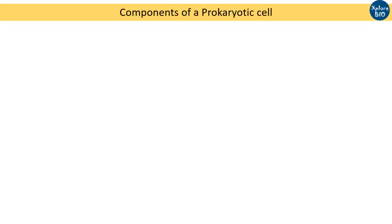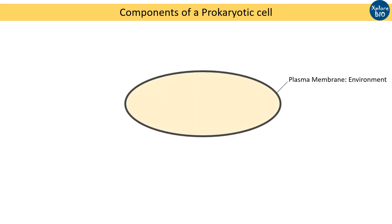So, let's begin with the components of a prokaryotic cell. The number one component is a plasma membrane. It is a layer that separates the internal environment from the outer environment. Ions, molecules, and waste quickly diffuse through this. The plasma membrane forms membrane infoldings known as mesosomes, which are involved in DNA replication, cell wall synthesis, enzymatic activities and secretion.